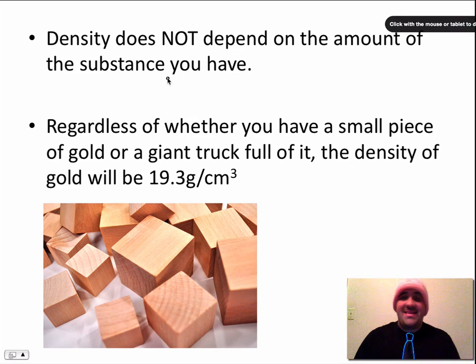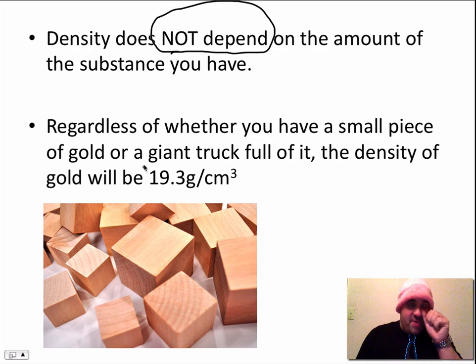So what we see here is that density does not depend on the amount of the substance you have. Regardless of whether you have a small piece of gold or a giant truck full of it, the density of all of that gold is going to be 19.3 grams per centimeters cubed.